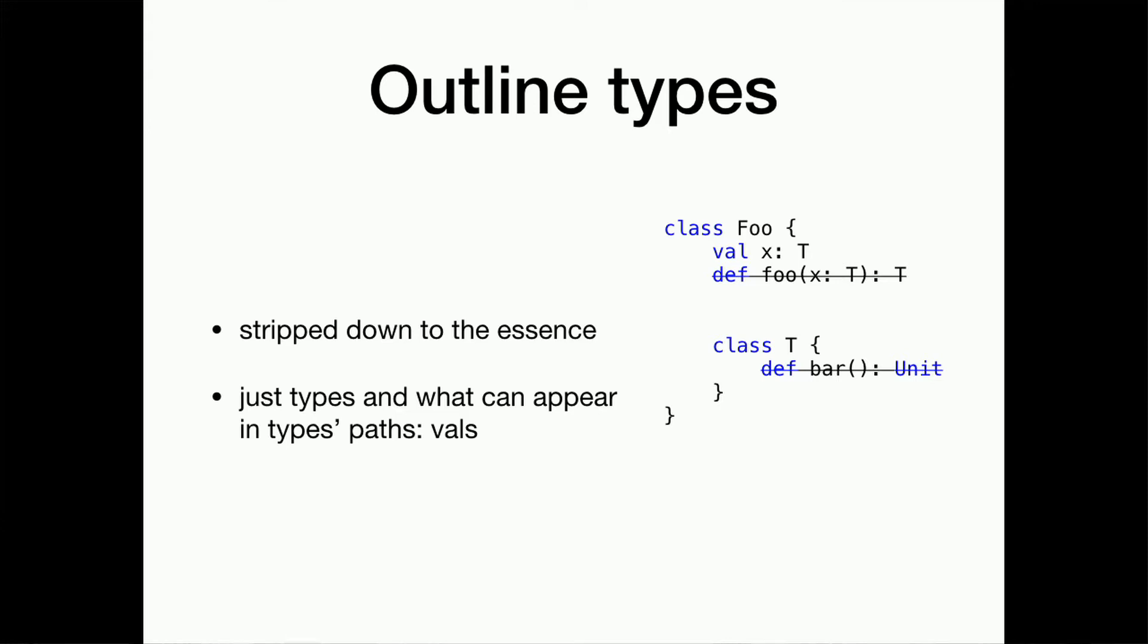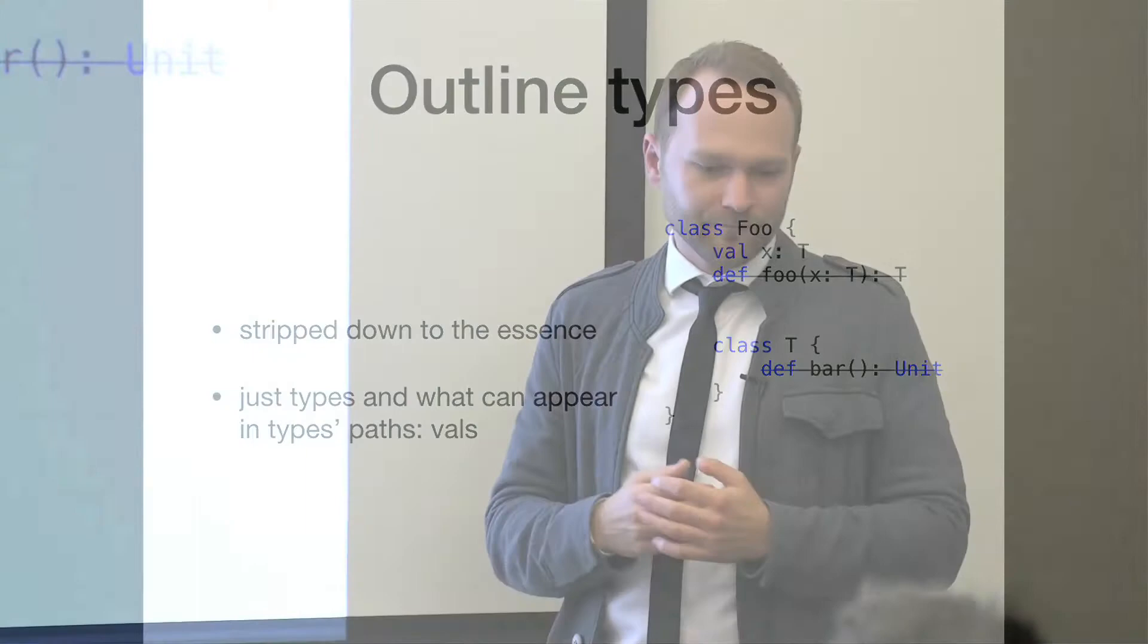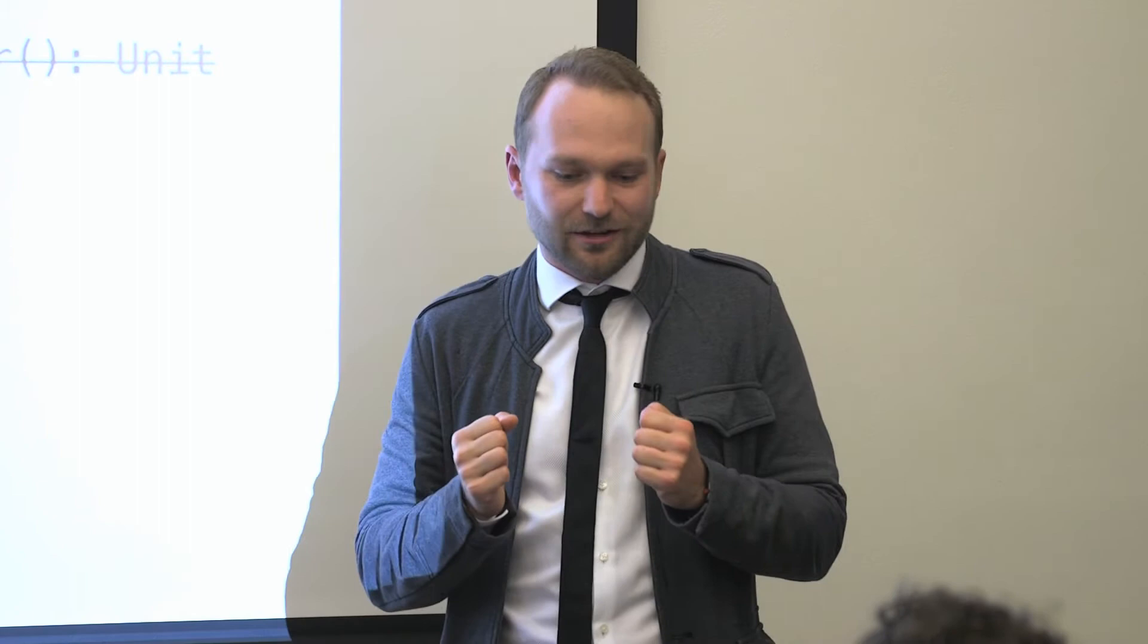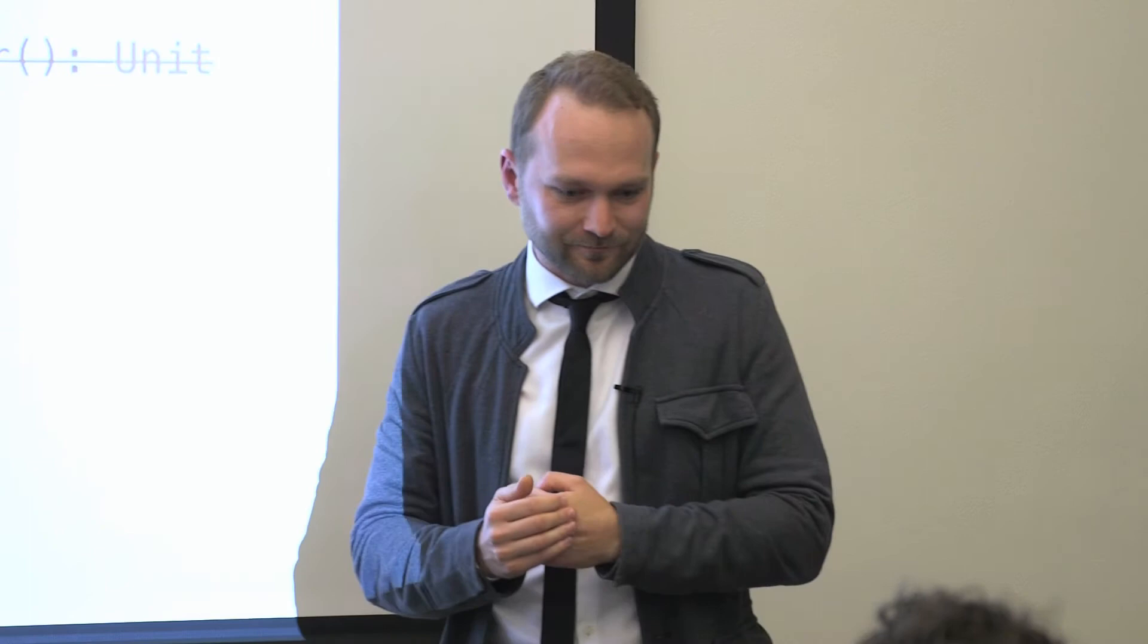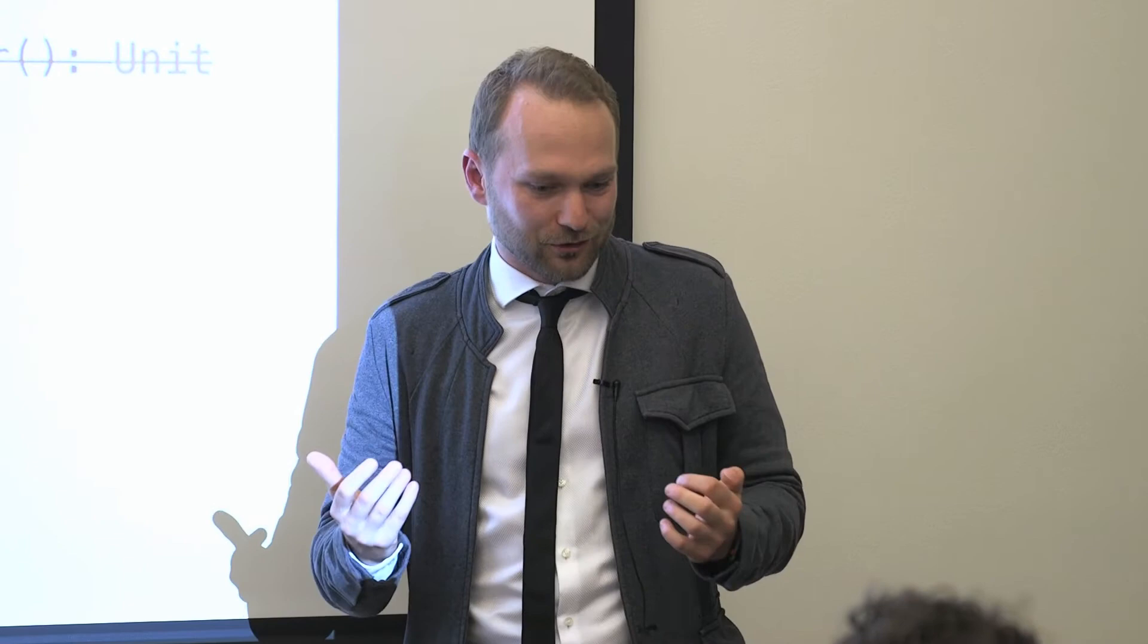Outline types are stripped down to their essence. They're only concerned with signatures of classes, objects, type definitions and vals. I cut everything non-essential to computing the dependencies. Outline types, for example, do not support subtype checking, which is weird in a programming language built around subtype checking. Outline types are so stripped down that initially it's hard to imagine that they can sustain Scala's complexity, but I was eager to find out.